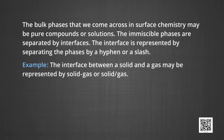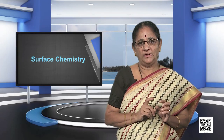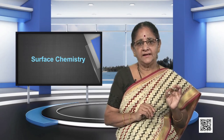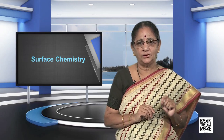The bulk phases in surface chemistry may be pure compounds or solutions. The immiscible phases are separated by interfaces, represented by separating the phases by a hyphen or a slash. For example, the interface between a solid and a gas may be represented as solid-gas. Due to complete miscibility, there is no interface between gases. The interface is normally a few molecules thick, but its area depends upon the size of the particles of the solid phase.